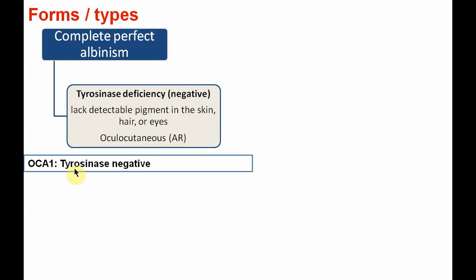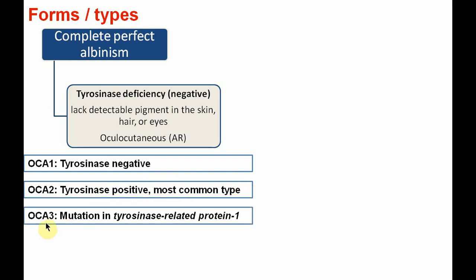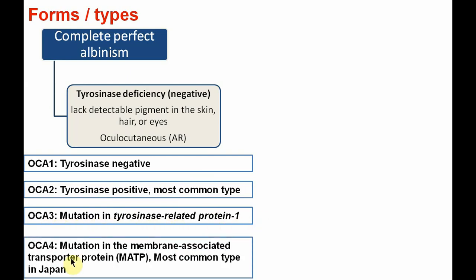Type 1 is considered the tyrosinase-negative form. Type 2 is tyrosinase-positive — at birth there is some activity, but later in life it fades away or is totally absent, and it is the most common type seen worldwide. Oculocutaneous type 3 involves a mutation in the tyrosinase-related protein 1. Type 4 involves a mutation in the membrane-associated transport protein and is the most common type seen in Japan.